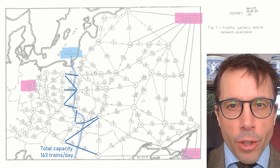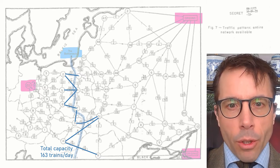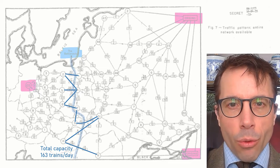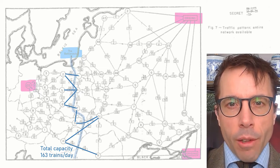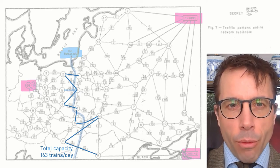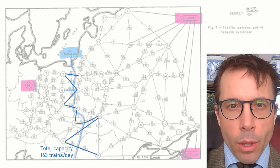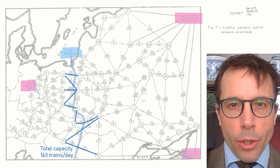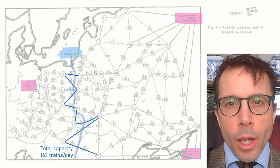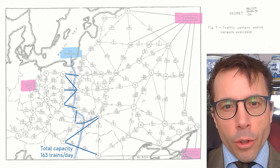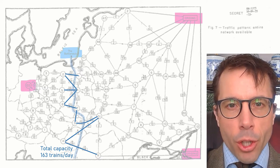It could cross it on any one of these links, the links that go from one side to the other, but it has to cross one of them. Therefore, if we add up the capacities of all of these blue edges, which in this case comes to 163 trains per day, it gives us an upper bound on the total amount of oil that can be shipped to East Germany.